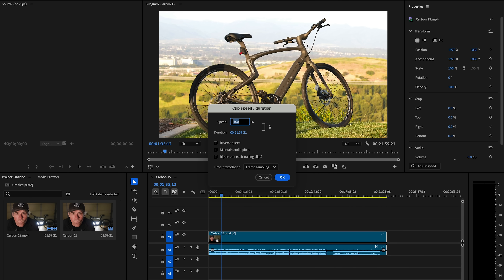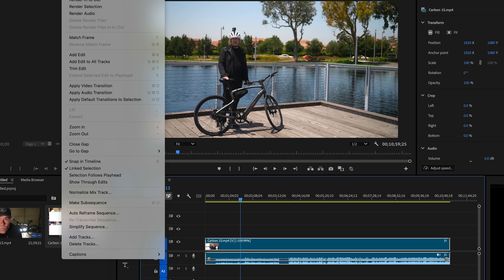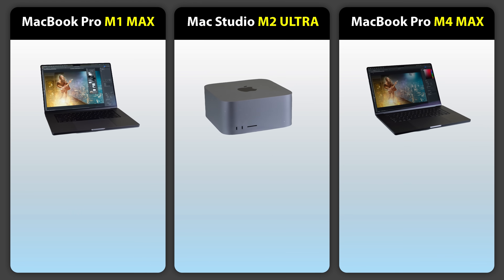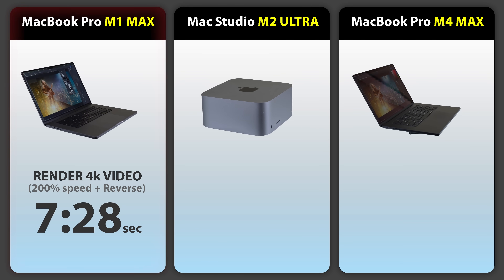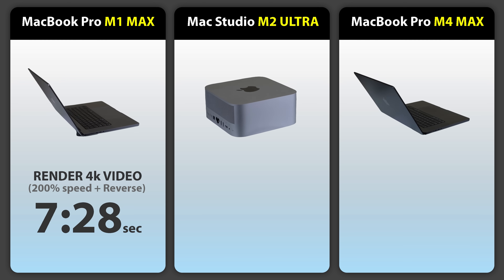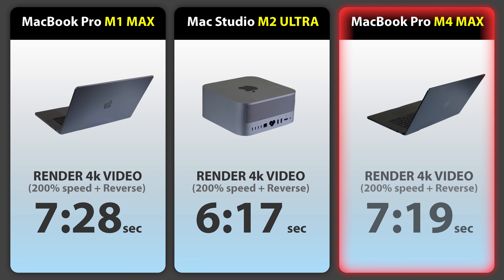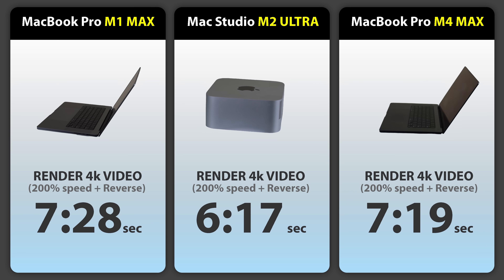Now we import the footage onto a new timeline, change the speed to 200% and put it in reverse mode — intensive for rendering. The M1 took 7 minutes and 28 seconds, the M2 Ultra 6 minutes and 17 seconds, the M4 MacBook Pro 7 minutes and 19 seconds. My advice: if you already have an M1 and it's working fine, I don't think you really need to sell it and buy an M4. We can get a few more years out of it — it's still a powerful computer performing well.